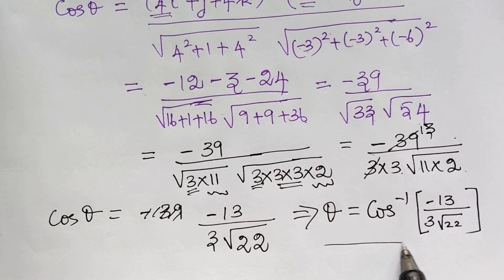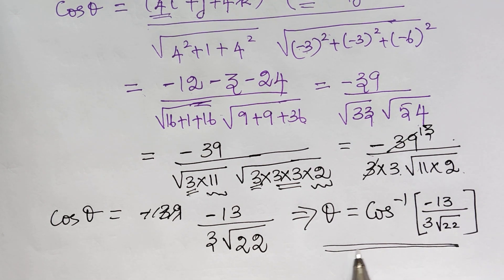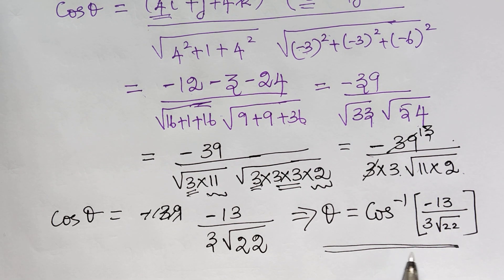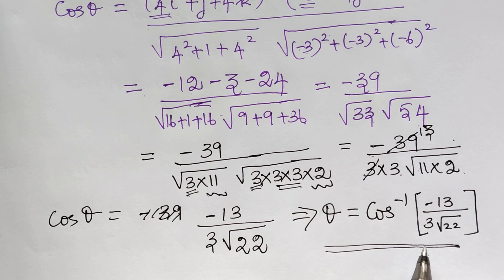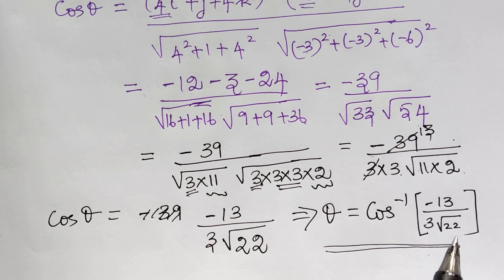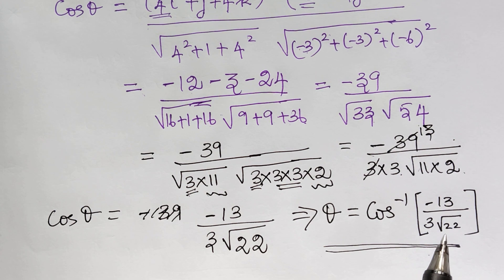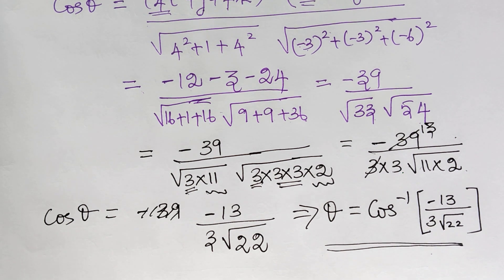Therefore, this is the angle between the normals to the given surface at the two given points P and Q. I hope you have understood this problem. In our next video we will learn how to prove that two surfaces intersect orthogonally — using the concept of angle between two surfaces to prove they are perpendicular to one another. Kindly follow the next video lecture. Thank you.